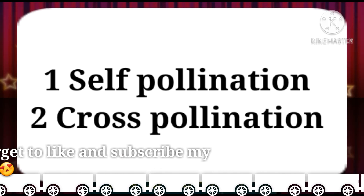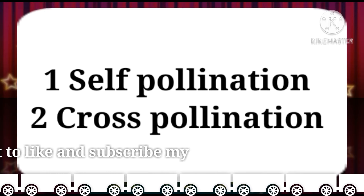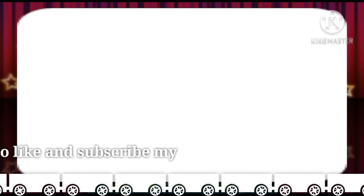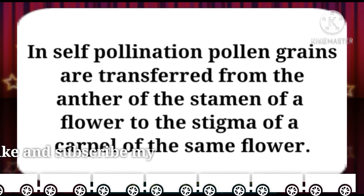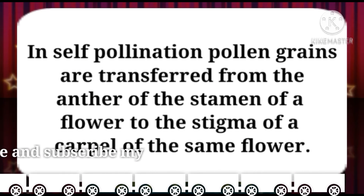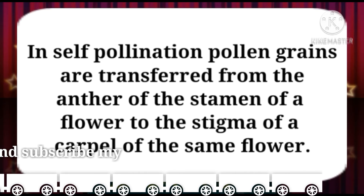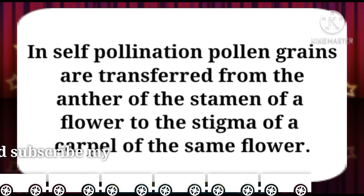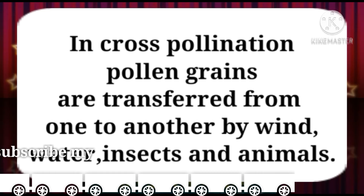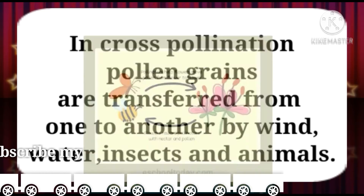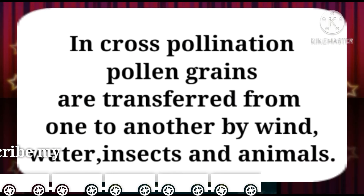There are two types of pollination: number one is self-pollination and number two is cross-pollination. In self-pollination, pollen grains are transferred from the anther of the stamen of a flower to the stigma of the carpel of the same flower. In cross-pollination, pollen grains are transferred from one flower to another by wind, water, insects, and animals.